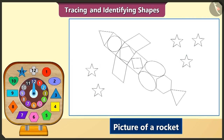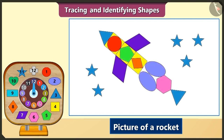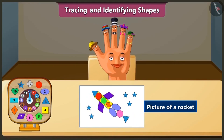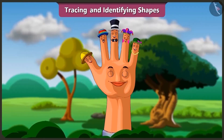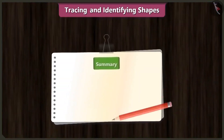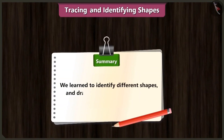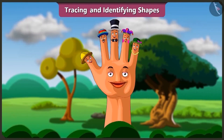If we fill the colors in this drawing, how would it look? If we fill the shapes we drew, it will look like this. Isn't it looking beautiful, Thumpkin? Friends, you can also draw some more pictures like this by tracing different shapes. Today we learned to identify different shapes and draw pictures by tracing them. You can also trace the shapes and draw different pictures.